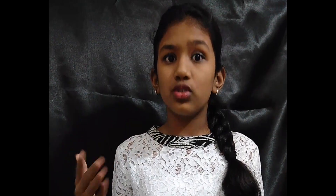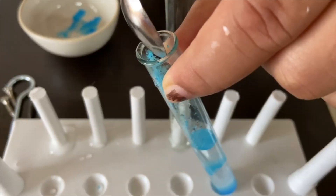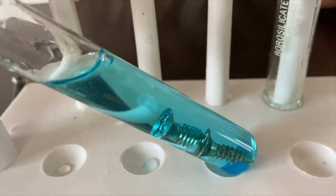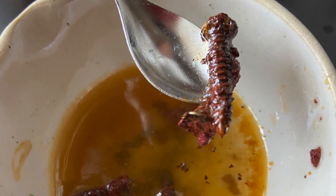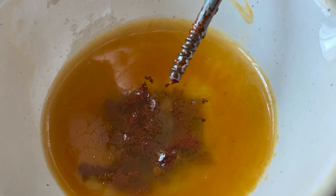This experiment will be performed by Mrudula ma'am because copper sulfate is a poisonous chemical and hence this experiment has to be performed by an adult. Things needed for this experiment are: copper sulfate, iron nails, spatula, tongs, and water. Dissolve two spoons of copper sulfate in some water, then add a few iron nails and keep it aside for a while. After sometime we will notice that the nails turn reddish-brown while the turquoise blue solution turns a pale green.